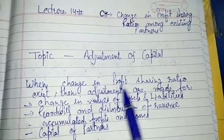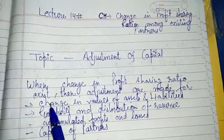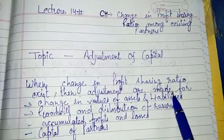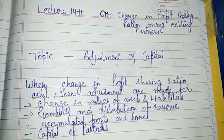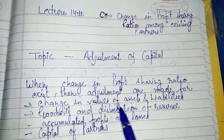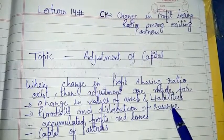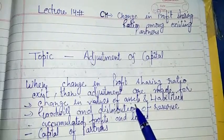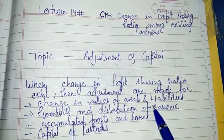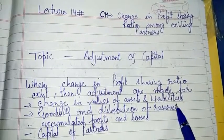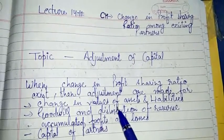When a change in profit sharing ratio exists, then adjustments are made. Adjustment includes change in value of assets and liabilities — if the value of assets and liabilities changes, the capital account is written off or debited accordingly.